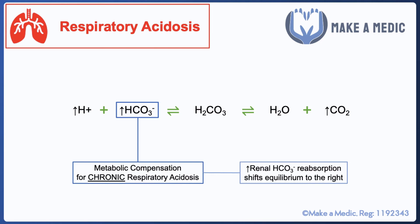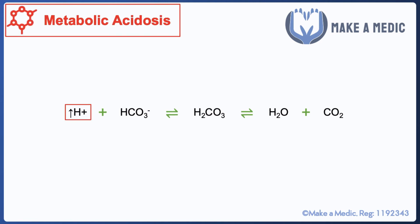We often talk about how COPD patients may be chronic carbon dioxide retainers and how we need to adjust their oxygen targets accordingly. We do this by looking primarily at the bicarbonate concentration — if the bicarbonate concentration is higher than the normal range, it suggests that the kidneys are trying to retain more bicarbonate to balance off a respiratory acidosis.